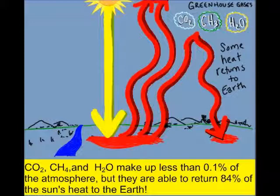CO2, which is carbon dioxide, CH4, which is methane, and H2O make up less than 0.1% of the atmosphere, but they're able to return 84% of the sun's heat from the Earth. You can see here, this is showing how those gases absorb the heat that was radiated from the Earth.